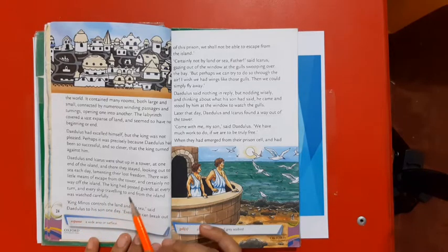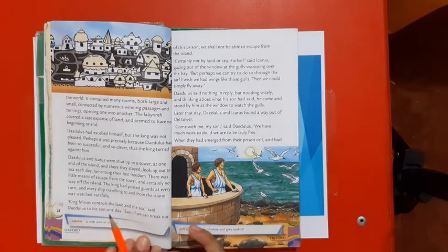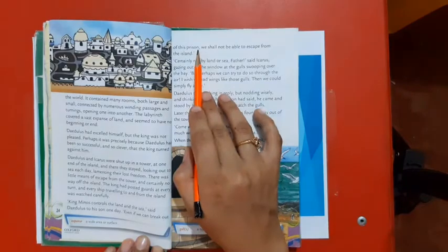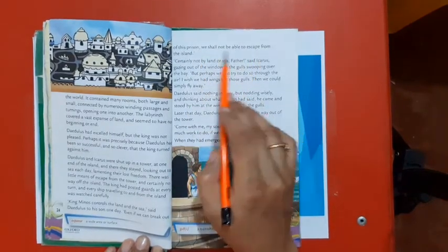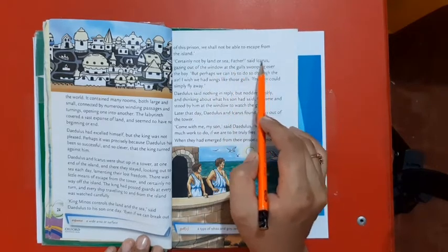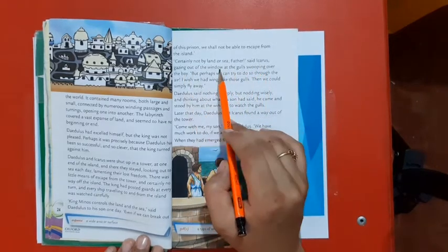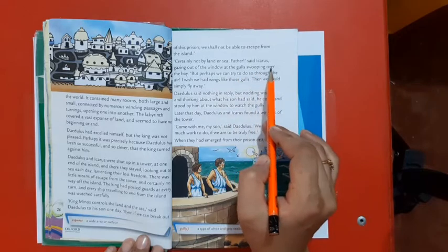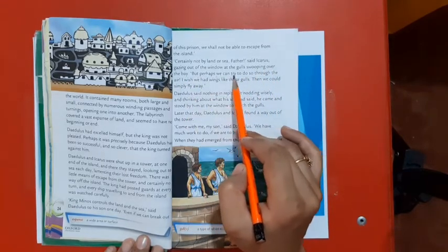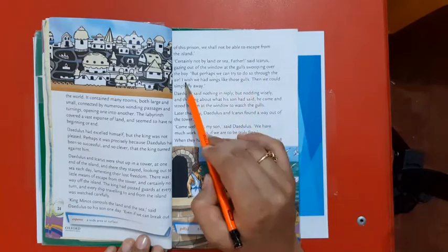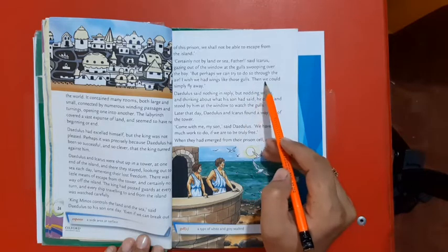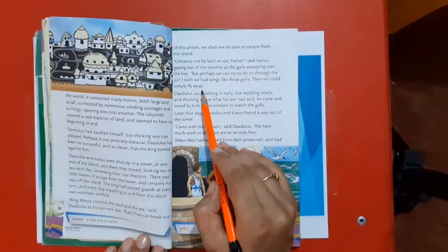King Minos controls the land and the sea, said Daedalus to his son one day. Even if we can break out of this prison, we shall not be able to escape from the island. Certainly not by the land or sea, father, said Icarus, gazing out of the window at the gulls swooping over the bay. But perhaps we can try to do so through the air. I wish we had wings like those gulls. Then we could simply fly away.